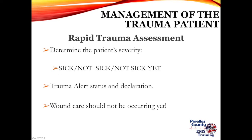For the rapid trauma assessment, determine the patient's severity — are they sick, not sick, or not quite sick yet? Know the patient's trauma alert status compared to state and local criteria and make that declaration. Wound care should not occur during the rapid trauma assessment. As a reminder: controlling life-threatening hemorrhage with tourniquets is not wound care — wound care is bandaging, splinting, or using a Sager. Applying a tourniquet is fixing a life-threatening condition.